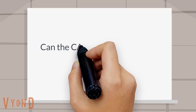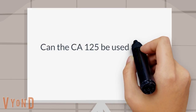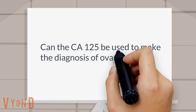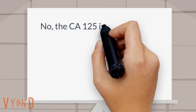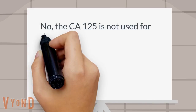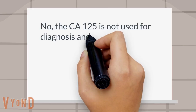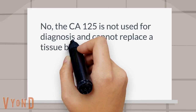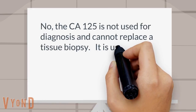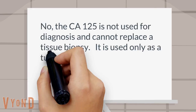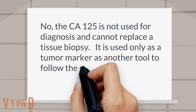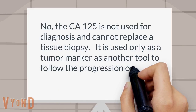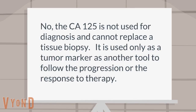Can the CA125 be used to make the diagnosis of ovarian cancer? No, the CA125 is not used for diagnosis and cannot replace a tissue biopsy. It is used only as a tumor marker as another tool to follow the progression or the response to therapy.